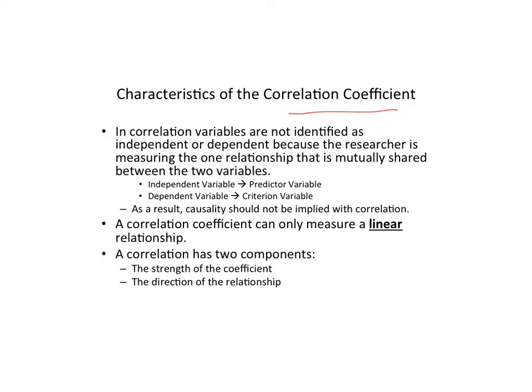In correlation, variables aren't usually identified as independent and dependent variables because our goal here is not to look for cause and effect, but instead to examine the relationship that is mutually shared between the variables. So what you would normally think of as your independent variable, we're going to call a predictor, and what you would normally think of as your dependent variable, you're going to call a criterion. Generally, in correlation, causation cannot be implied. You can only find causation from true experimental studies — you cannot have cause and effect with correlational studies.